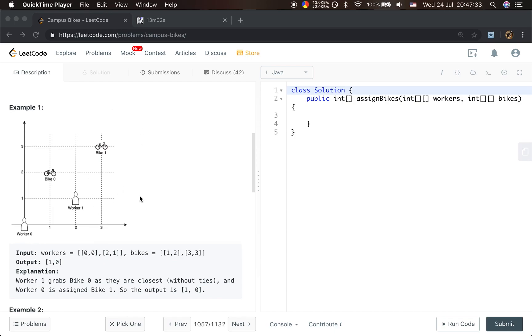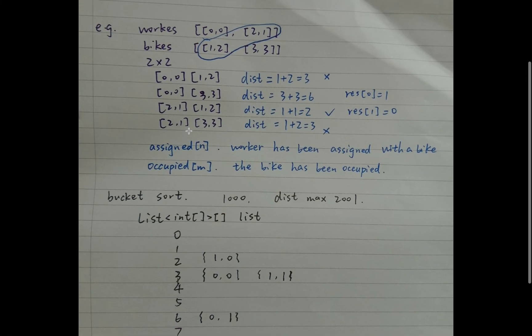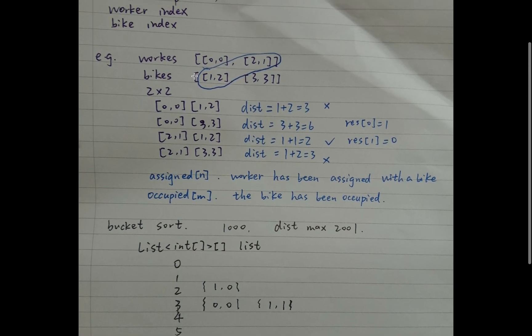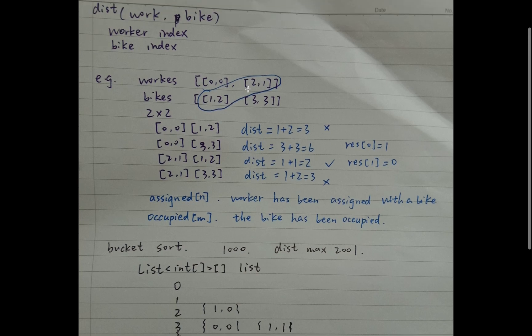So for this example, let's see. This is the worker index and this is the bike index. So we can get 2 times 2, which is 4 pairs. We calculate their distances respectively and get 3, 6, 2, 3.